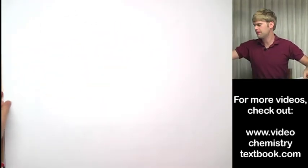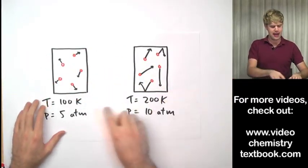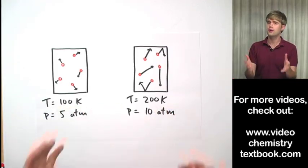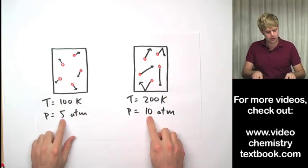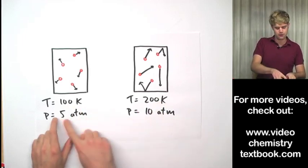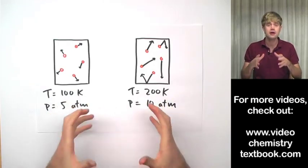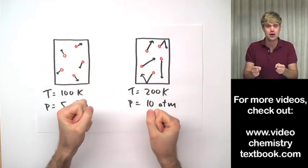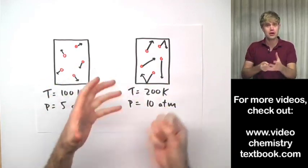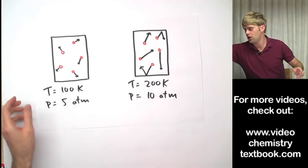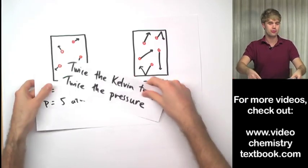This is important because kinetic energy relates directly to pressure and volume. If I have a sample of gas in a fixed container with fixed volume, and I double the Kelvin temperature from 100 Kelvin to 200 Kelvin, we said it's going to double the amount of kinetic energy in that sample — and what that's going to do is double the pressure. So we double the temperature and we double the pressure, going from 5 ATM to 10 ATM in this example. Since the kinetic energy is twice as high, these particles are moving twice as fast, so they're banging into the sides of the container twice as hard, which causes twice the pressure. Twice the Kelvin temperature equals twice the pressure.